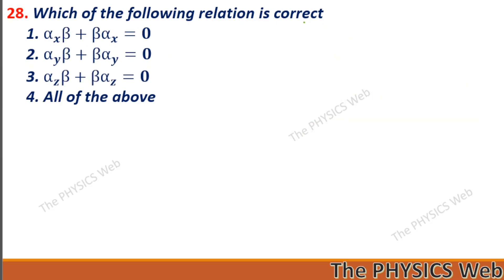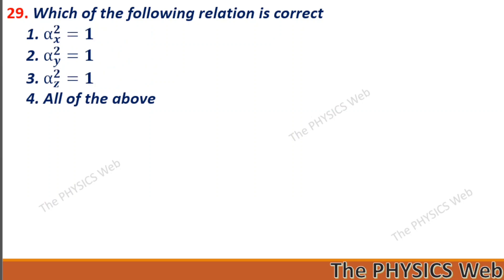Which of the following relations is correct? We know alpha and beta anticommute, so all of the above relations are correct — four is your correct option. Which of the following relations is correct? The square of the alpha matrices gives you the identity matrix I, so all of the above relations are correct — four is your correct option.